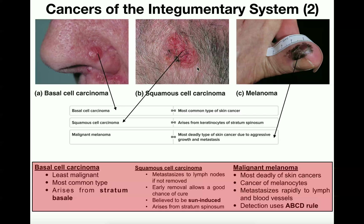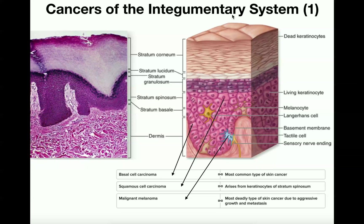Because of this, early detection is the best method to prevent metastasis — if detected early, they can be removed quickly, giving a good chance of being cured. These cancers are thought to be sun-induced. UV light from the sun penetrates through the skin cells and hits the stratum spinosum cells, causing their DNA to mutate, which is how they become cancerous.